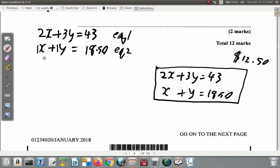Now if you use substitution, what you could say is that you subtract X from both sides of equation 2. Over here, 1X minus 1X is 0X, so you have Y equals 18.50 minus X. I'm subtracting X from both sides.